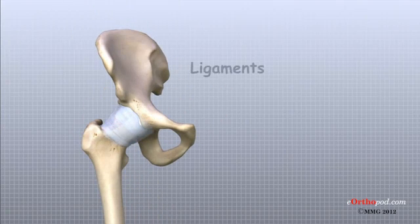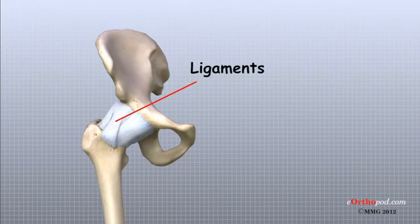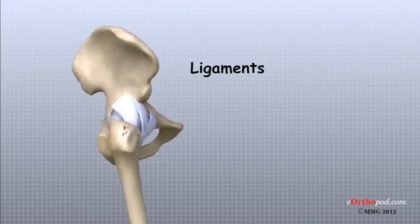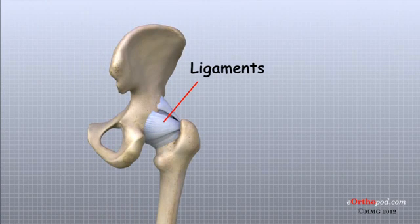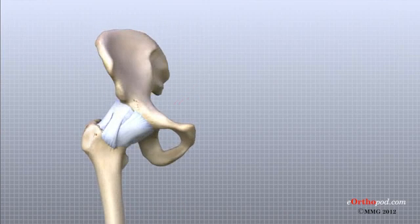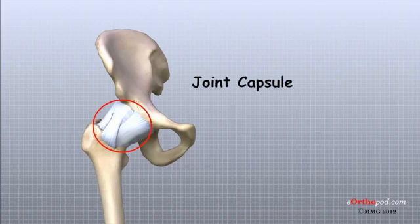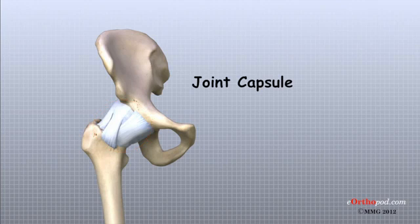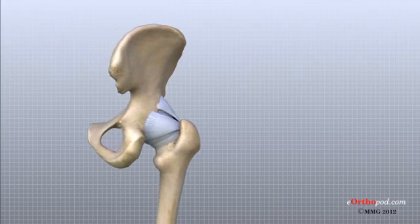Ligaments are soft tissue structures that connect bones to bones. There are several important ligaments in and around the hip. Surrounding the hip joint, the joint capsule is formed by a group of strong ligaments that connect the top of the femur to the acetabulum. A joint capsule is a watertight sac that surrounds a joint. These ligaments of the joint capsule are the main source of stability for the hip. They help hold the femoral head in place in the acetabulum or socket.